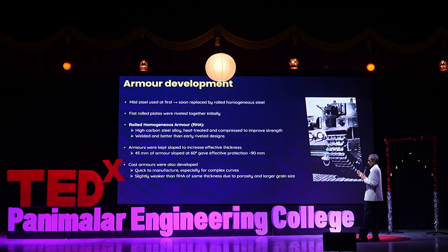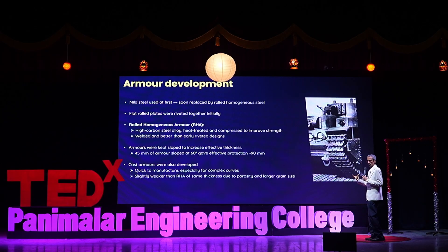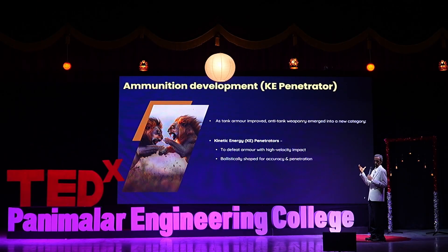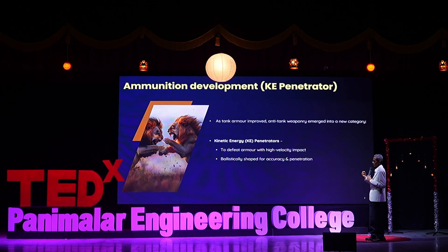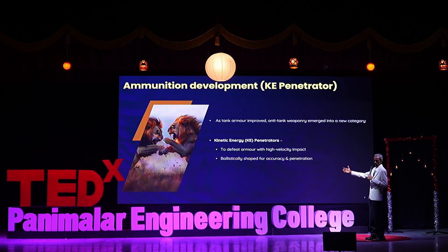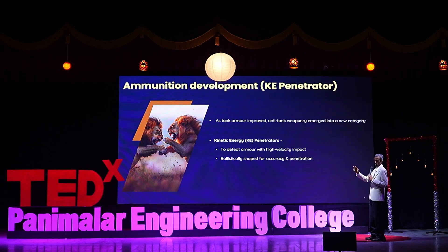There was also the Russian school of thought — cast armors, which were easy to manufacture in large numbers. But as engineers would understand, cast armor comes with inherent defects. Now the fight started. Ammunition developers were pitted against the armor we saw. To penetrate the armor we need kinetic energy — not low energy, but energy of the order of 10 megajoules. This kind of kinetic energy penetrator was designed to defeat 500 to 600 mm of armor packed in the tank. It is also ballistically shaped to first reach the target and then penetrate it.